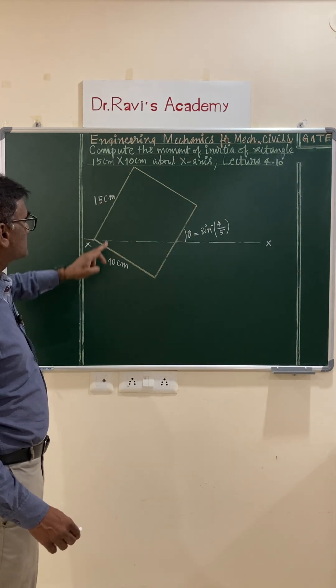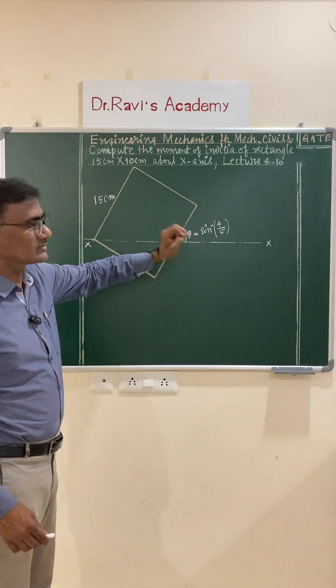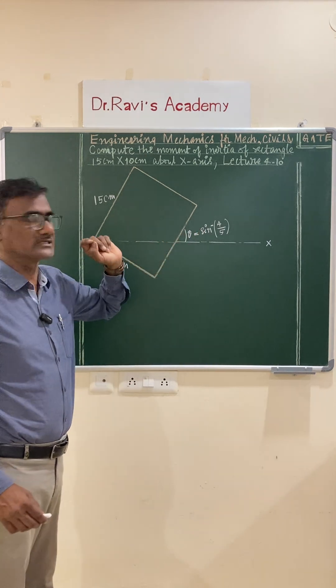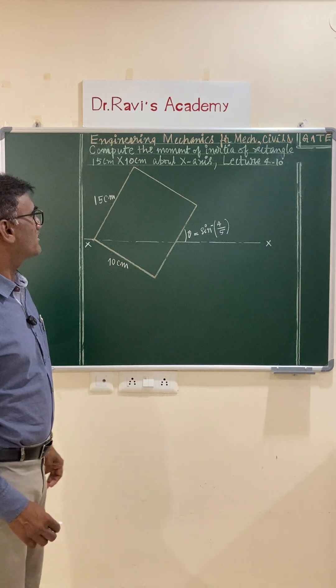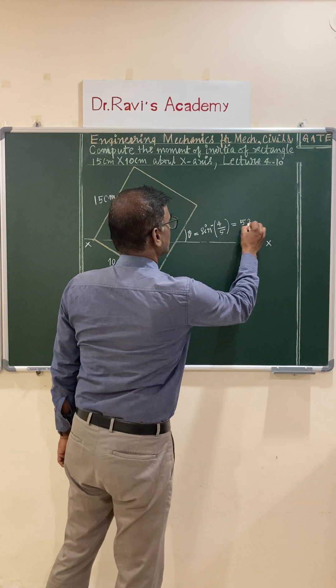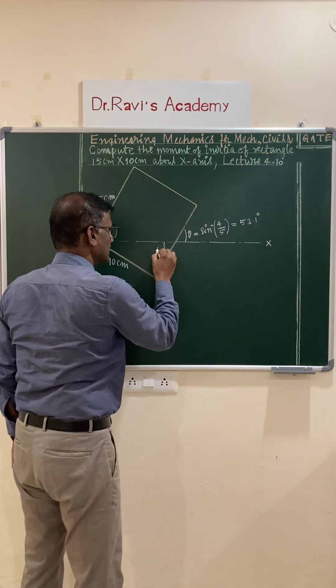It is 15 centimeters by 10 centimeters, inclined at an angle theta equals sine inverse 4 by 5 about the x-axis, which is given. In this particular problem, this angle is given. Calculate the angle: this angle will be 53.1 degrees, and this is also the same angle, that is theta.